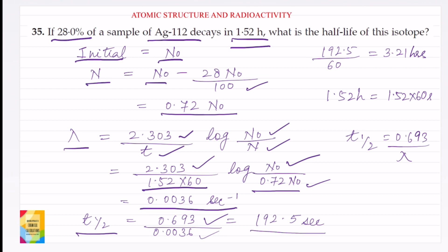Or if we convert it into hours, 192.5 divided by 60 will give the time in hours, that is 3.21 hours. So this is also equal to 3.21 hours.